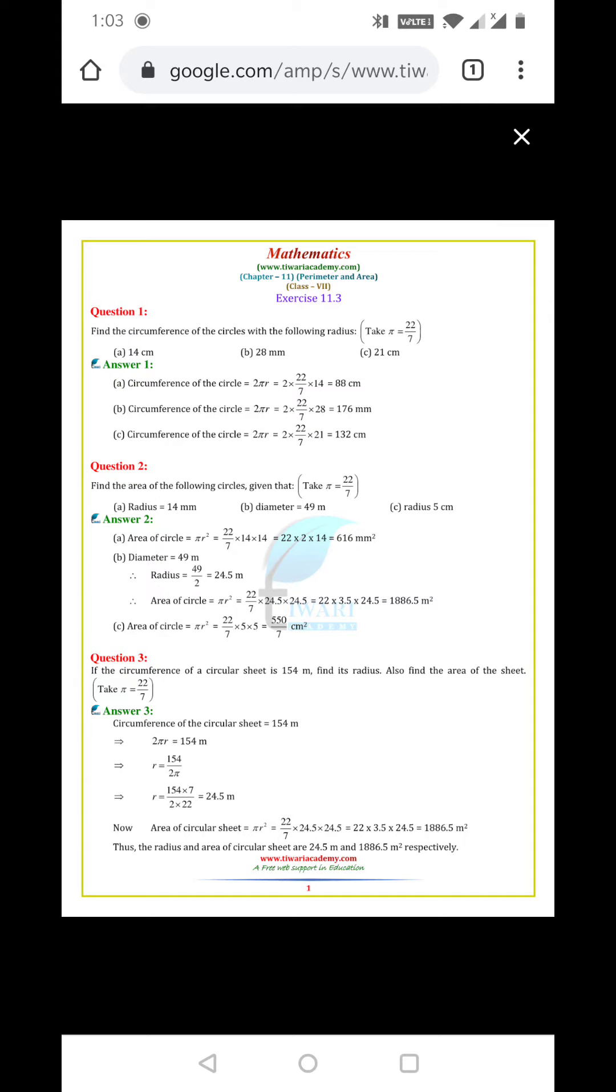Diameter equals 2r, so r equals diameter by 2. Here 49 by 2 equals 24.5, this is the value of the radius.